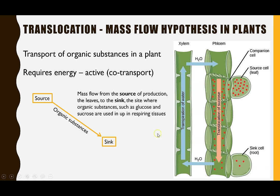This is all linked to what we call the mass flow hypothesis. There is always a source — where the organic substance is created. In this example we're thinking about sucrose, which is created in the leaves during photosynthesis. The sink is where the sucrose is transported to and used — specifically the respiring cells. We'll go through exactly how sucrose or glucose moves from the source cell into the sieve tube elements all the way to the sink cell.